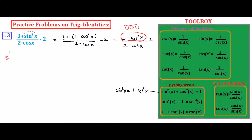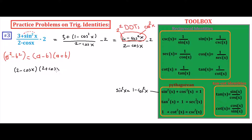Difference of two squares: a squared minus b squared equals a minus b times a plus b. Here our a term is two (since four is two squared) and our b term is cosine x. So four minus cosine squared x equals two minus cosine x times two plus cosine x. Over two minus cosine x, the two minus cosine x factors cancel, leaving two plus cosine x. Then two cancels two and our final answer is cosine x.